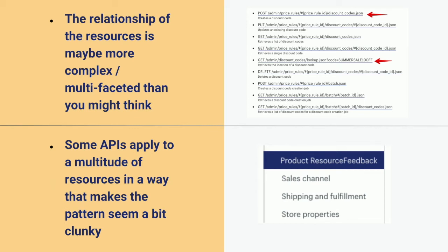Then there were other resources that were problematic for different reasons, like product resource feedback. When we started out with resource feedback at Shopify, it was at the admin level. Then as we moved forward, we started enabling developers to access resource feedback on other resources such as products. I applied the same rule to how we'd surface it in our navigation, but it just looks a little bit unwieldy. And then more than that, people working in dev relations and developer experience — working in the front lines with our partners — were saying things like: 'Our partners and internally we always just call it product feedback. Why don't we just call it product feedback?'